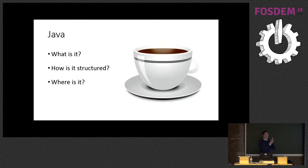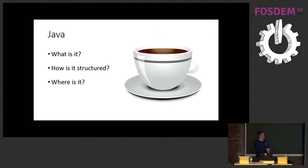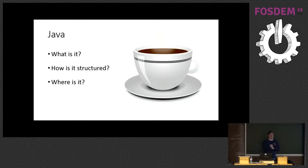First of all, Java. It's both a programming language and an executable, and that executable can be used to run compiled Java code. The executable is often packaged with many other tools inside a package called the JDK. You've got the Java Runtime Environment, which is used to execute code. You've got the compiler, which builds code into bytecodes. You've got JShell, which can run individual bits of Java code piece-by-piece. You've got JLink — we're going to be going into that later. There are a lot of different tools inside the JDK.